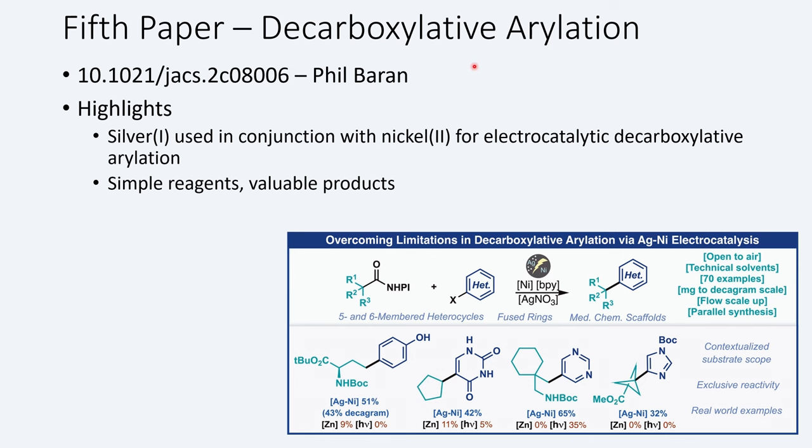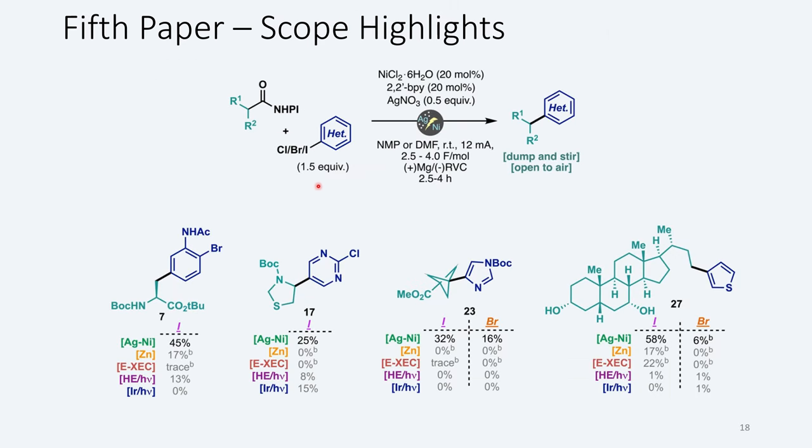Now, the fifth paper for today is decarboxylative arylation. This is from Phil Baran's group. There's a lot of authors on this paper, and the highlights of this paper include the use of silver in conjunction with nickel catalysis for electrocatalytic decarboxylation. And they demonstrate that this works better than some of the contemporary methodologies. And it utilizes simple reagents, and it has valuable products. It's air stable, water stable, and they even use lower purity solvents to demonstrate that this is something people could actually use. And so some of the highlights of the scope are that they were able to use aryl iodides, bromides, and chlorides. They will usually compare them in most cases. And they combine this with redox active esters in the presence of their electrocatalytic conditions. And they're able to undergo decarboxylative cross-coupling to afford their sp3-sp2 coupled products.